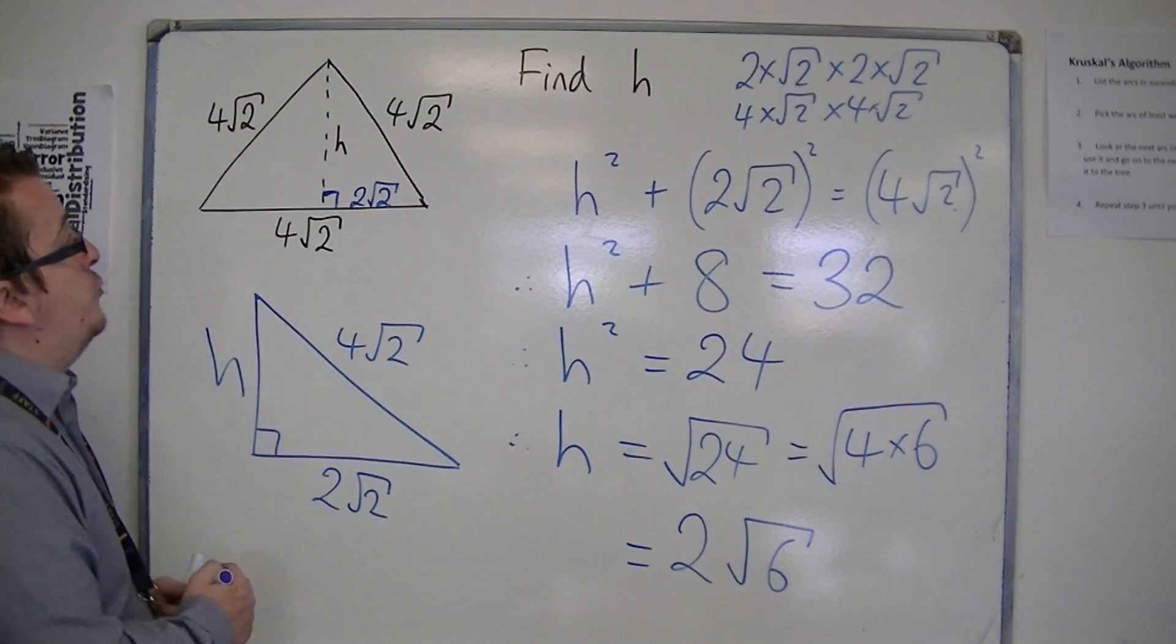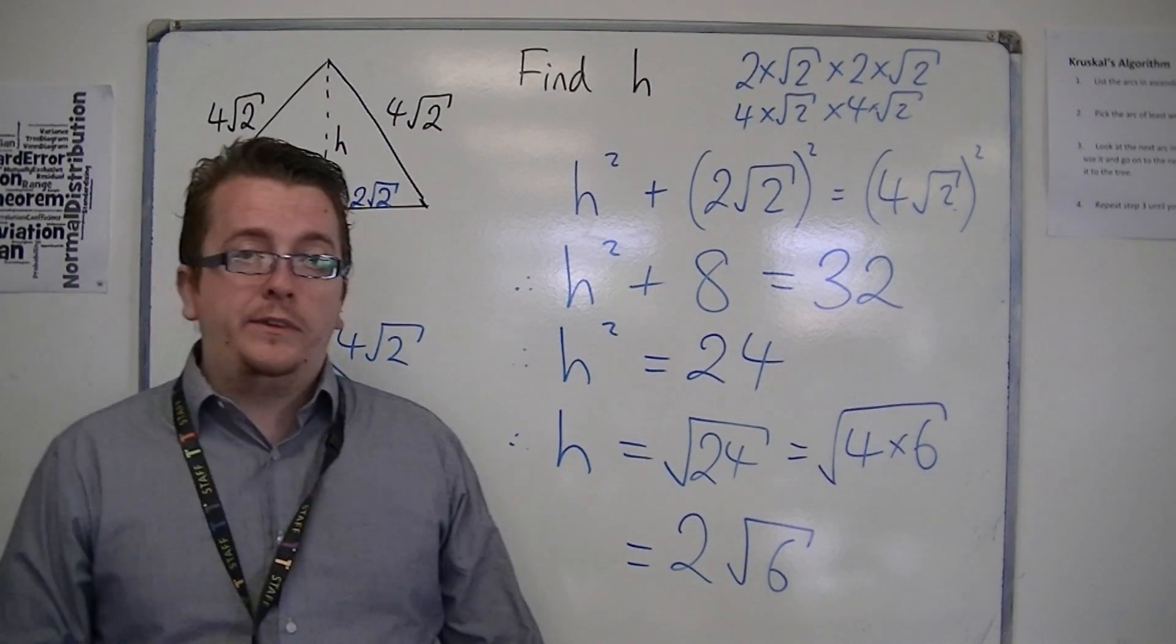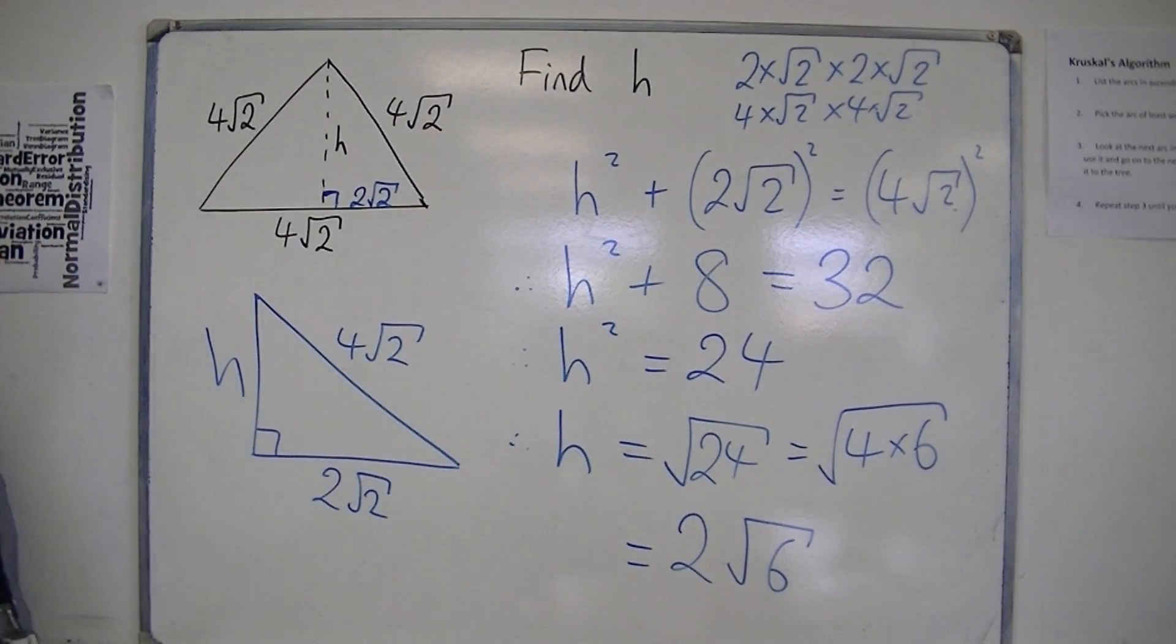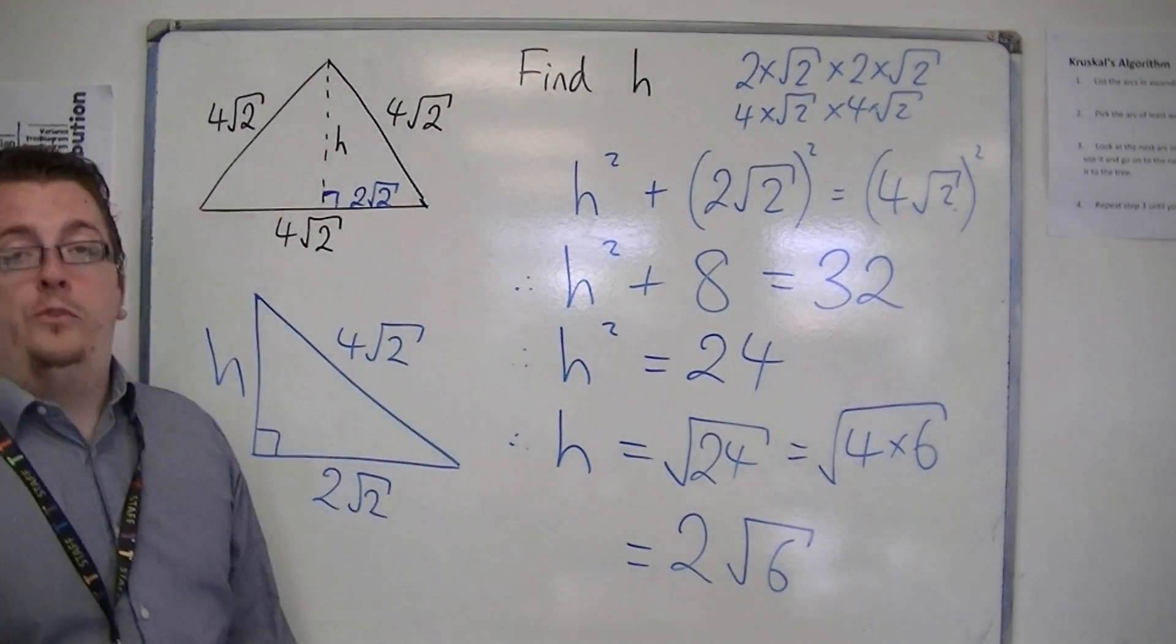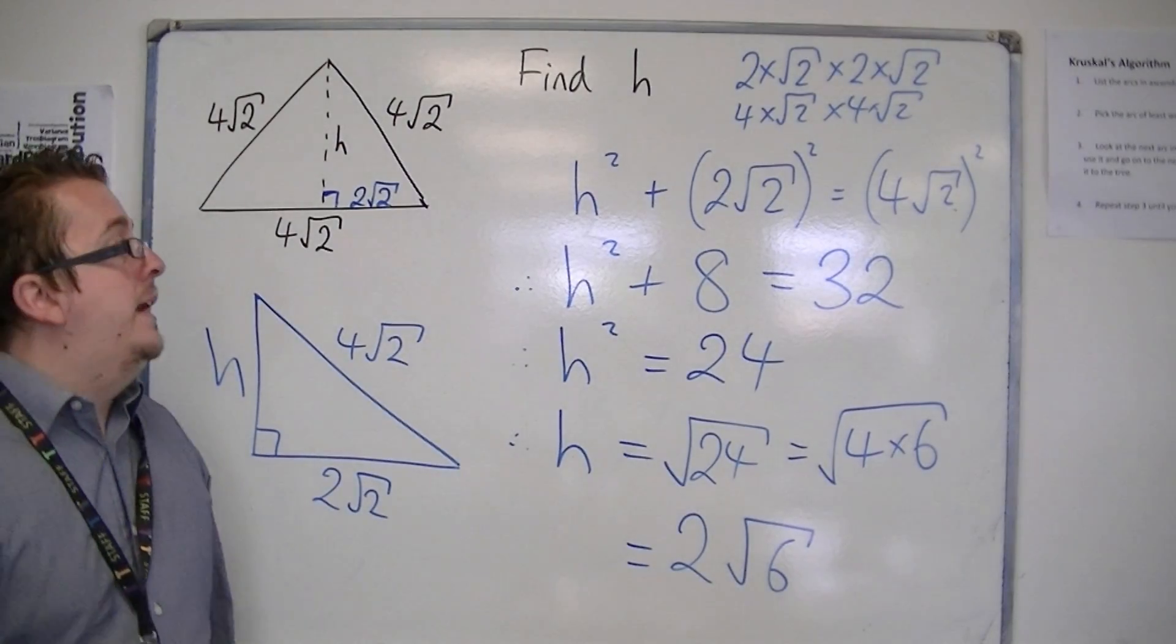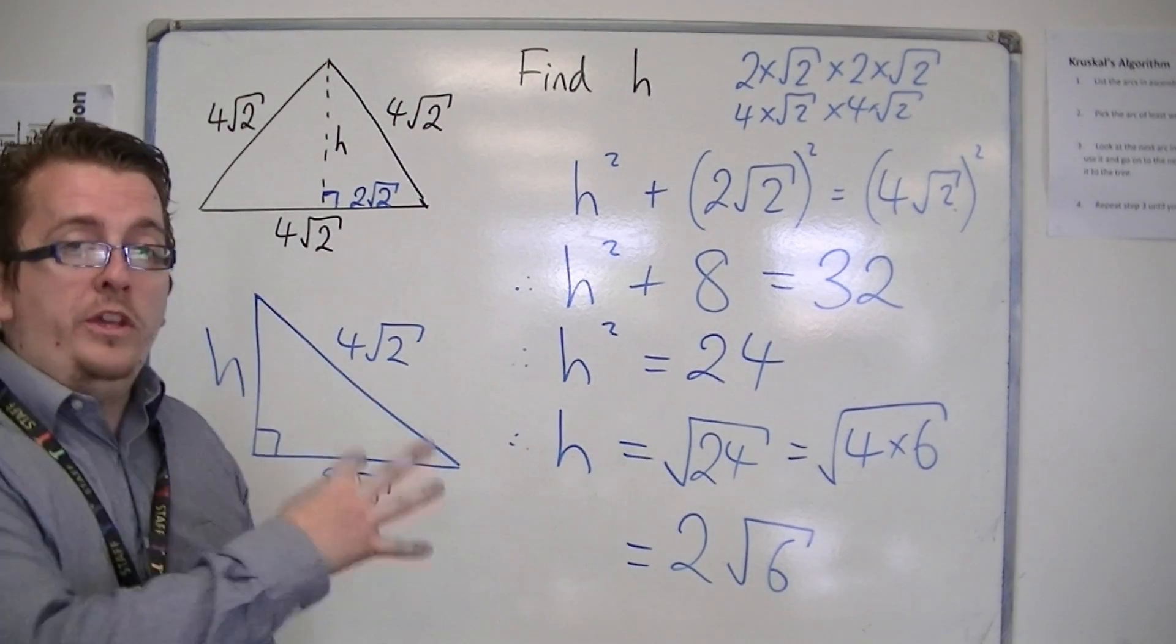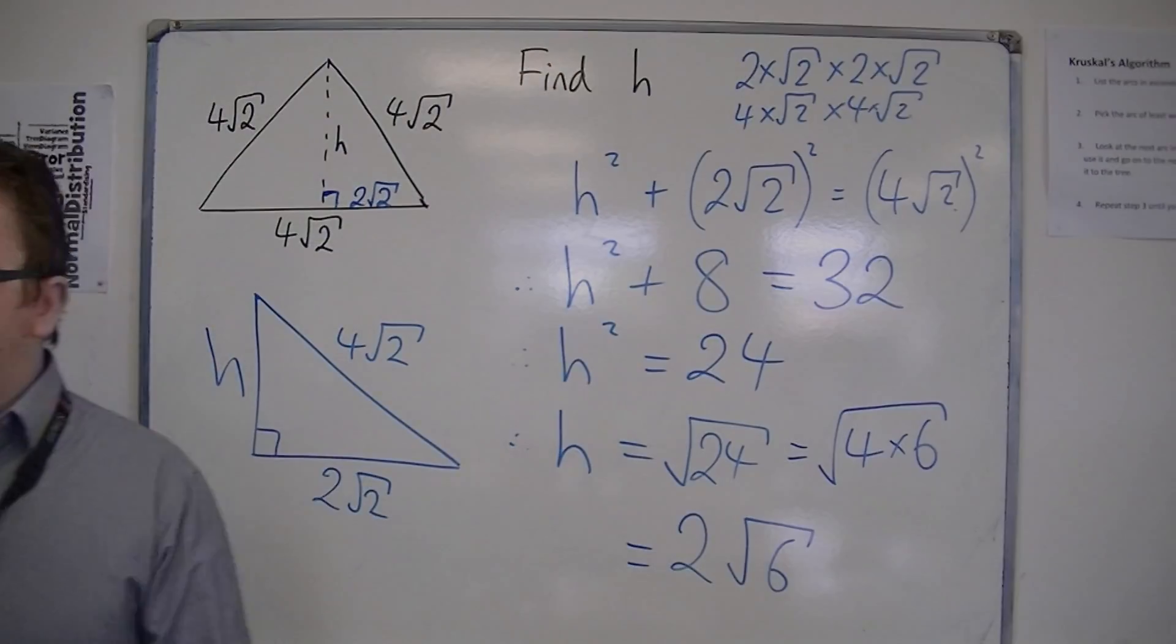So the height of the triangle can be written as 2 root 6, and it would be just using Pythagoras. So this is another example of something where you need to use something that you have already been taught at GCSE level in order to apply it using surds.